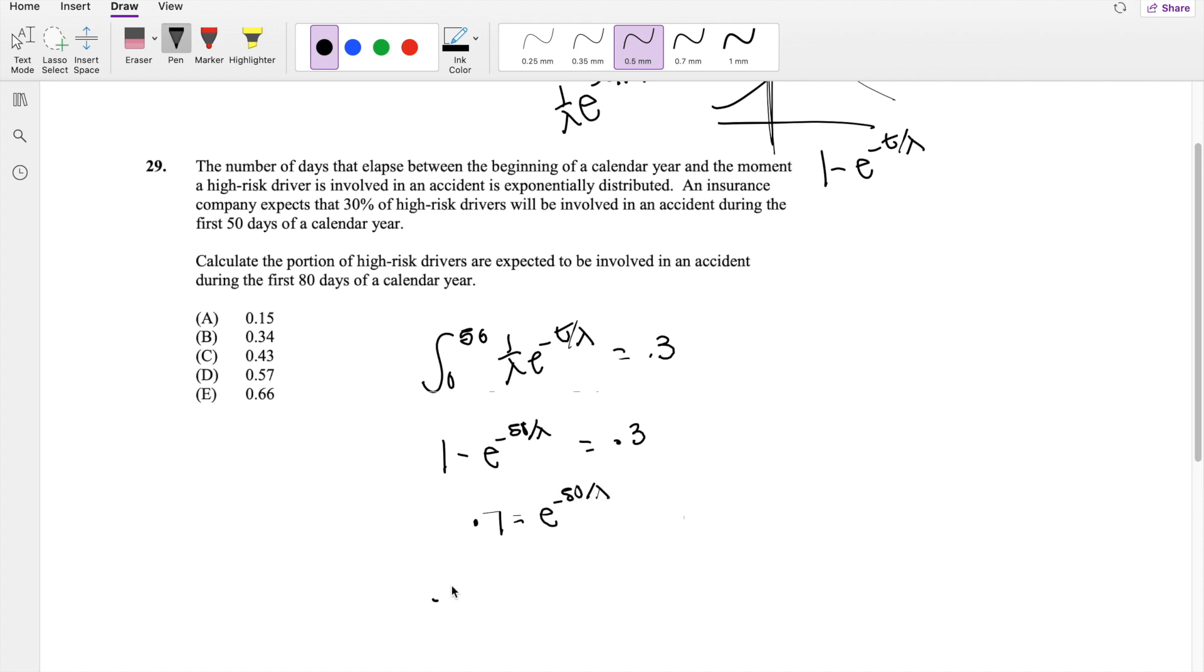So then I can take the natural log of both sides, negative 50 over lambda. So then lambda equals negative 50 divided by natural log of 0.7.